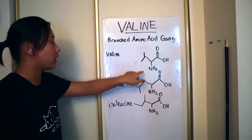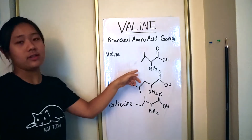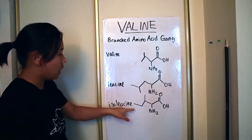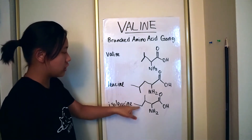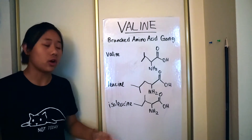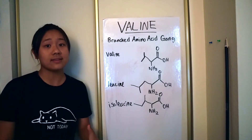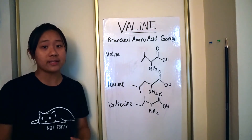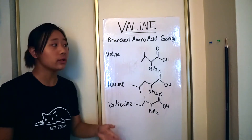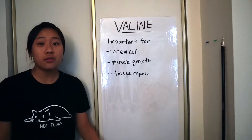You can see on their side chains that they all have these little branched parts at the end. These amino acids are all essential, meaning that we can't synthesize them in our bodies. We need to get them from our diet and they're only synthesized in plants. So eat your veggies, kids.